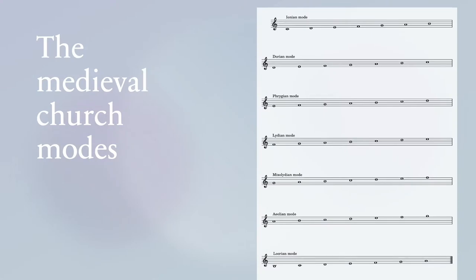We just have to begin with different ground tones: Ionian begins with C, Dorian with D, Phrygian with E, and so on. They are also often called the church scales, because in that time professional music was composed by and for the church. It could sound like Monty Python showed us in their movie.